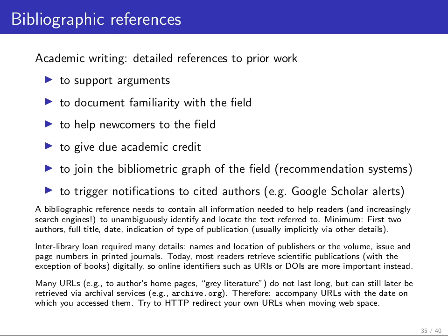We also give bibliographic references to give due academic credit. If we are using some material, some figure, or some ideas, we should always very clearly state where we got this from. More recently, bibliographic references have also become a data source. There are recommendation systems that try to build what's known as a bibliometric graph — a graph where the edges are bibliographic references and the vertices are publications — and search engines like Google Scholar that automatically find out who has cited whom and provide notification services.